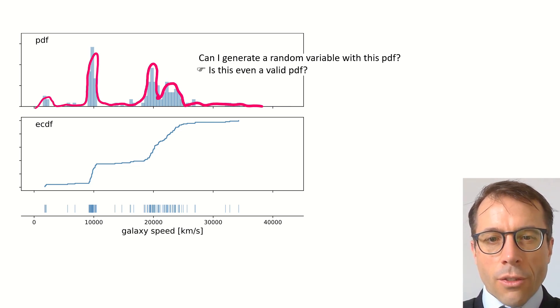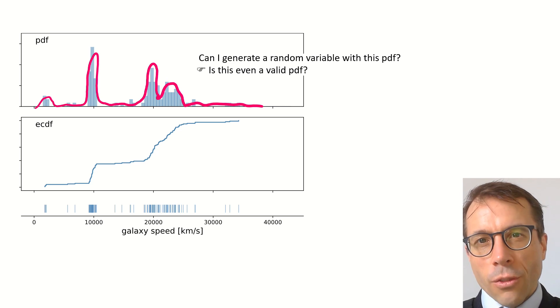But this is very tricky to get right. What if we've drawn something that isn't even a PDF? A PDF has to integrate to 1, and this is hard to enforce when we're just sketching a curve by hand. If I try to make my PDF a bit taller in one place, to fit the histogram better, I have to make it smaller everywhere else, and this is very fiddly to do.